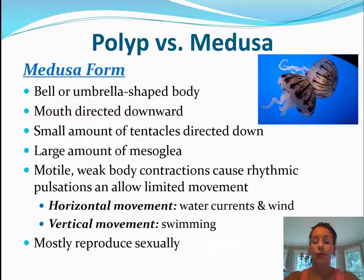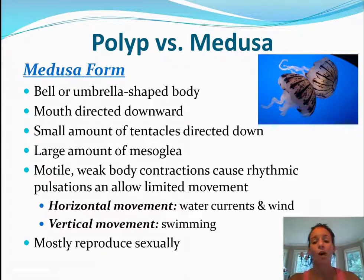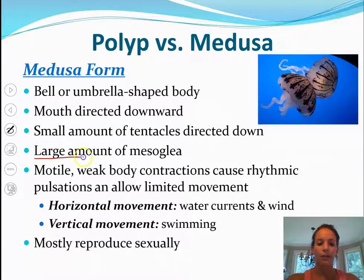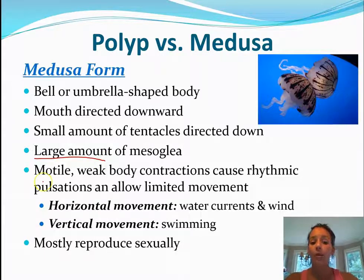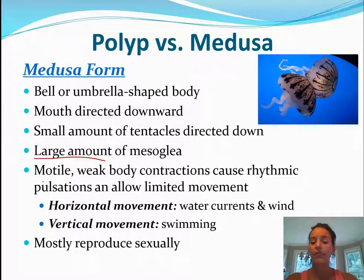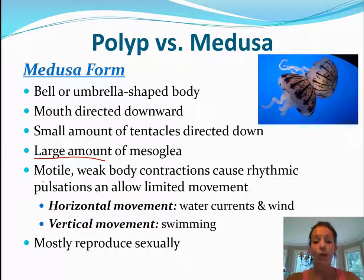The medusa form is what we commonly think of — it has a bell or umbrella-shaped body with the mouth directed downward. It has a small number of tentacles directed downward but a large amount of mesoglea. They have motile weak body contractions that allow them to move, though they're not fast. They typically move with water flow. They can move horizontally by water currents and wind without using energy, or they can move up and down vertically by swimming. Most medusa forms reproduce sexually.